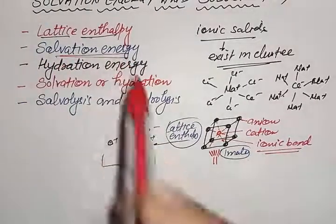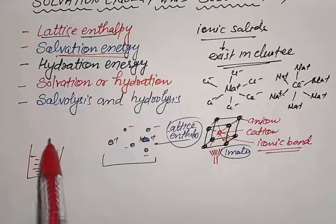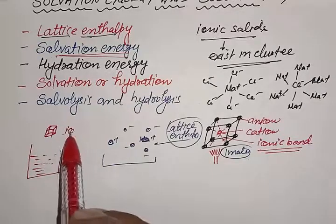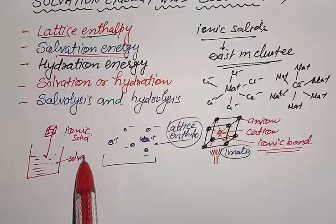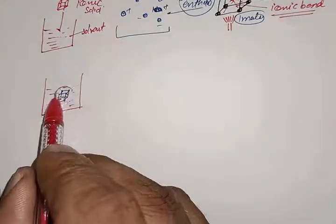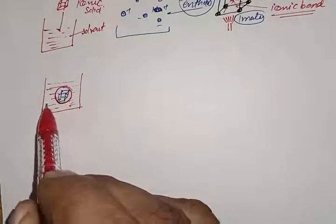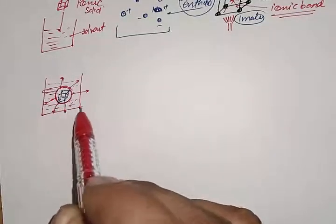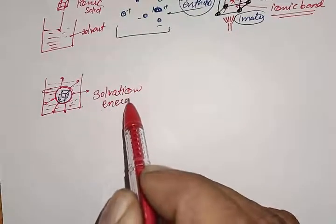The second term is solvation energy. Suppose we have a particular solvent and we add an ionic solid into it. The solvent molecules will surround the lattice of the ionic solid, and when the solvent molecules surround the lattice, a certain amount of energy is released. This amount of energy is called solvation energy.